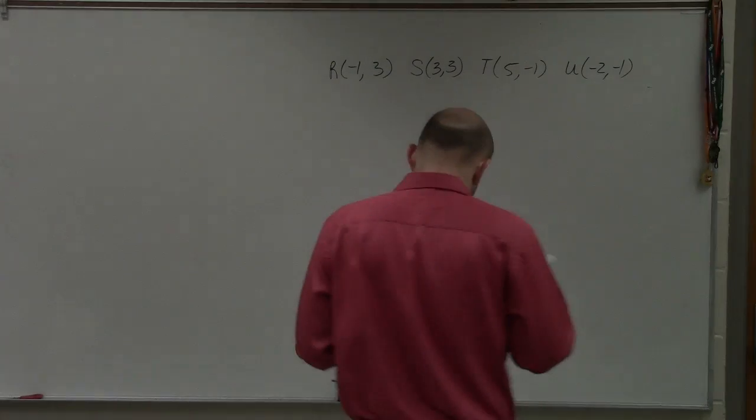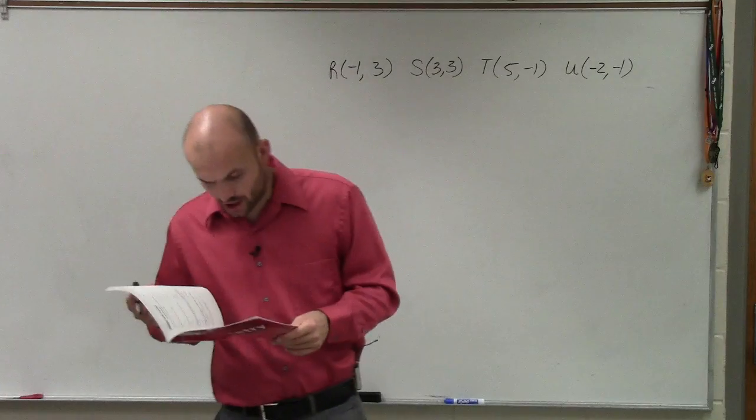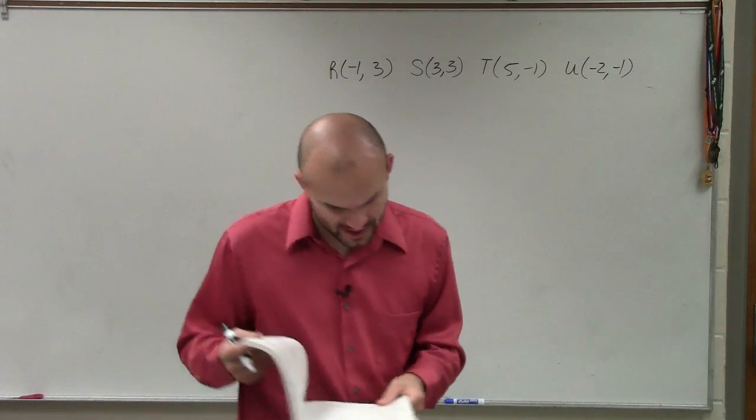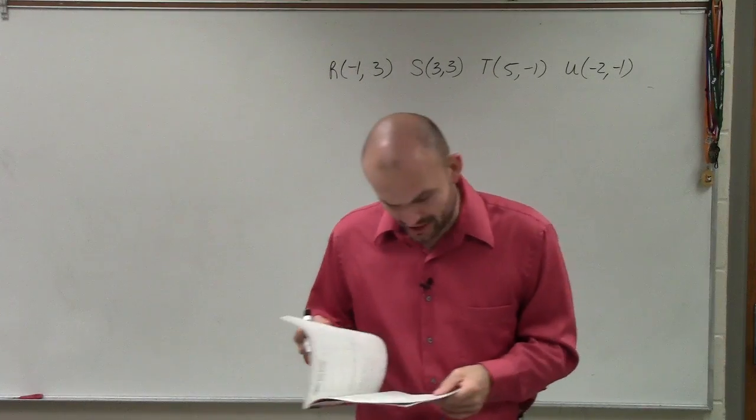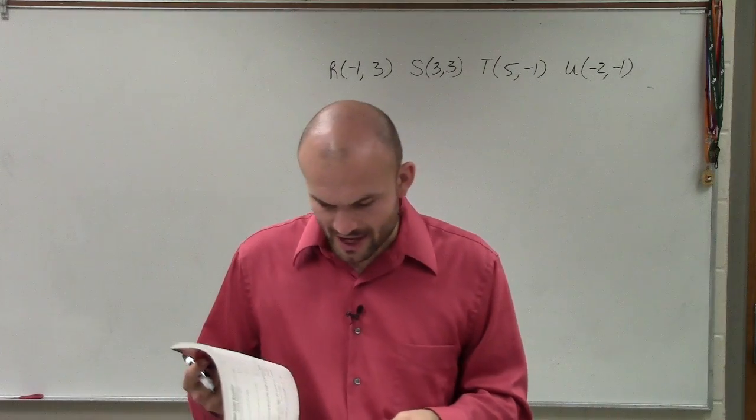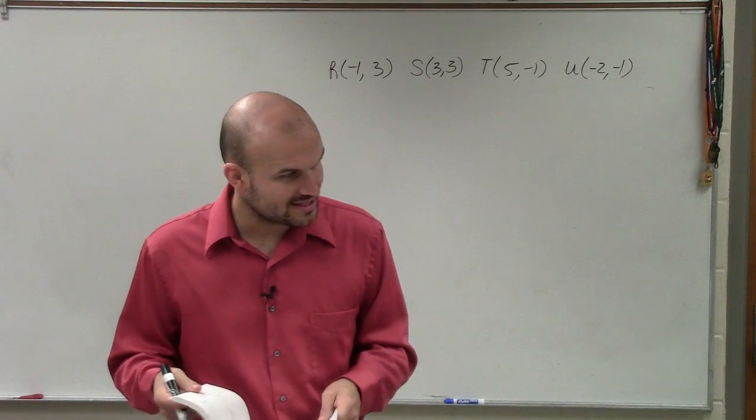So on number 20, it says the coordinates of the vertices of a quadrilateral are negative 1, 3; 3, 3; 5, negative 1; and negative 2, negative 1. Find the perimeter of the quadrilateral, round to the nearest tenth.